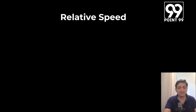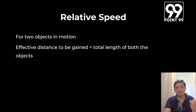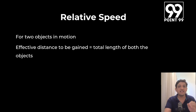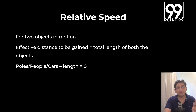Relative speed applies when two objects are moving together, or one object is trying to overtake or cross another. The effective distance that needs to be covered when one object is overtaking or crossing another is the total length of both objects. For practical purposes, ports, people, cars and signals have negligible length and are treated as zero, but for bridges, stations, tunnels and trains you always have to consider the length of that particular object.